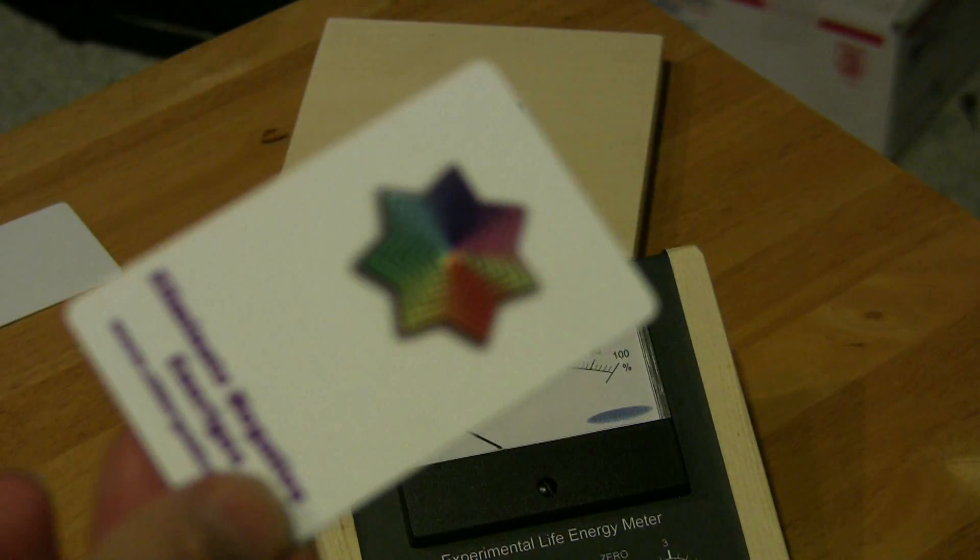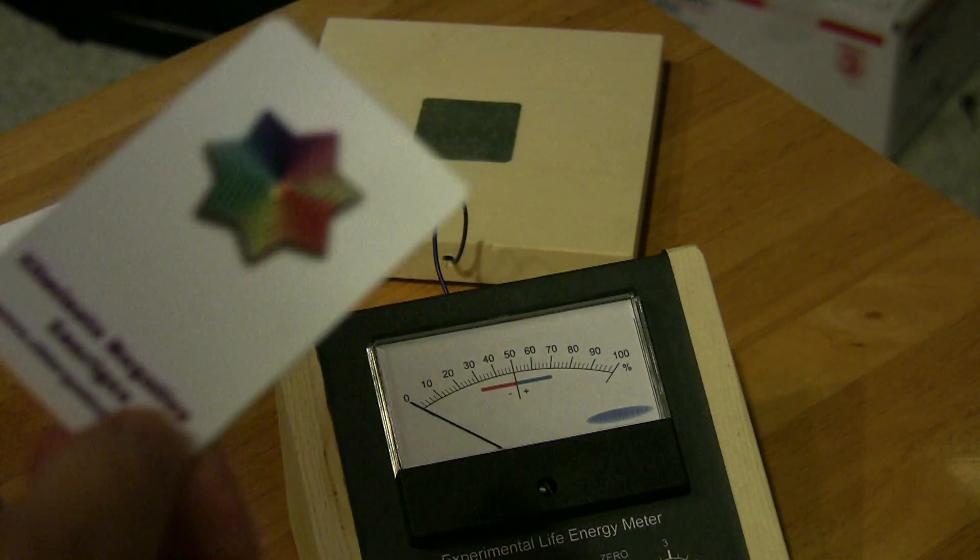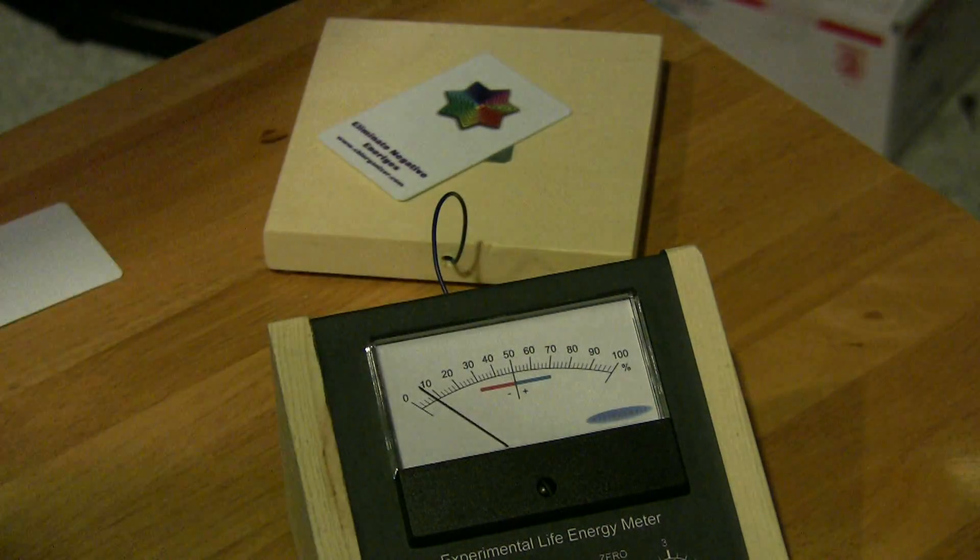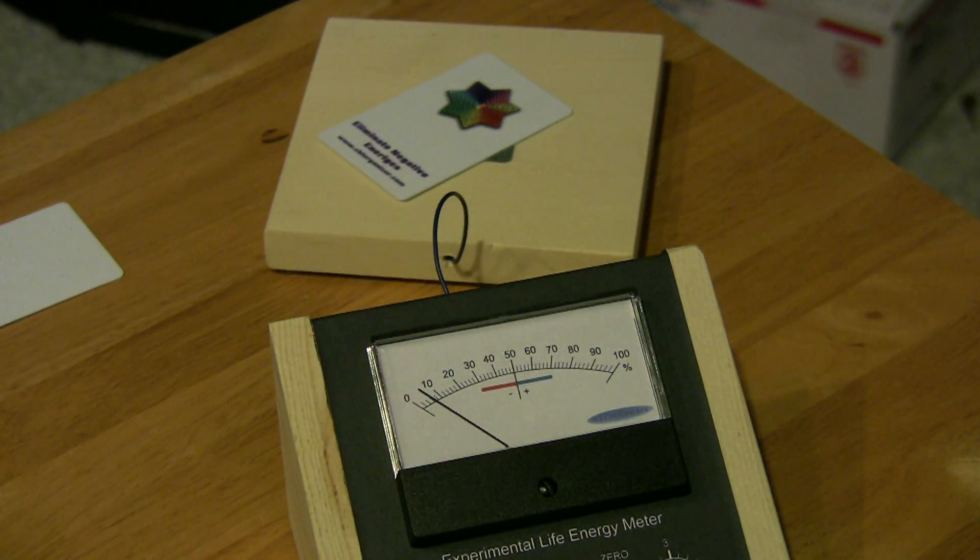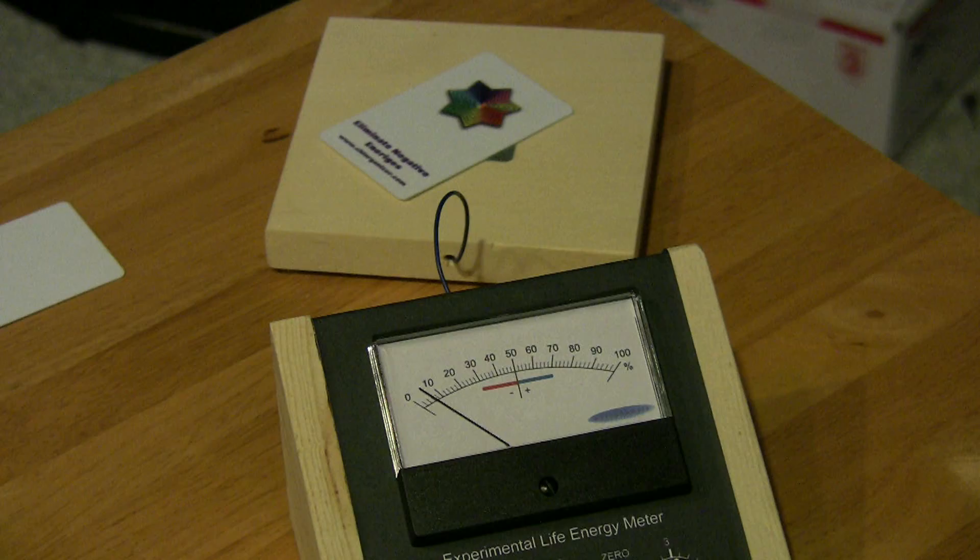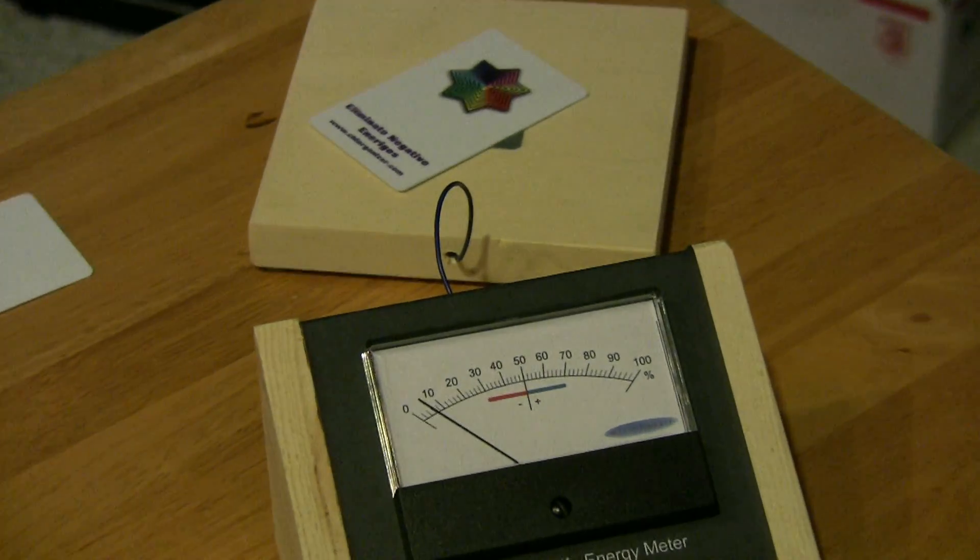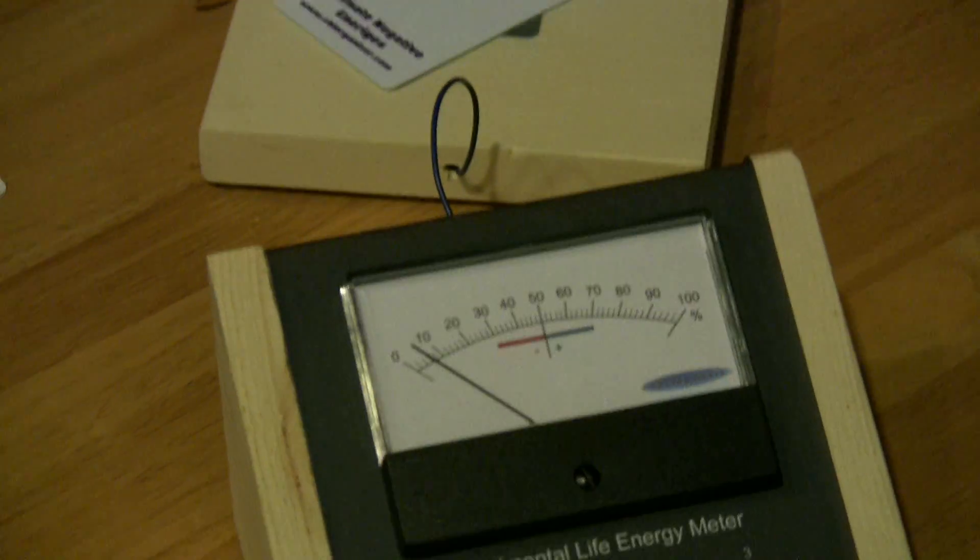And one more time for the negative energy program card. And we get about, again, about eight on the scale. And I'll zoom in on that a little bit, so we can get a little better look at the meter. I'll see you next time.